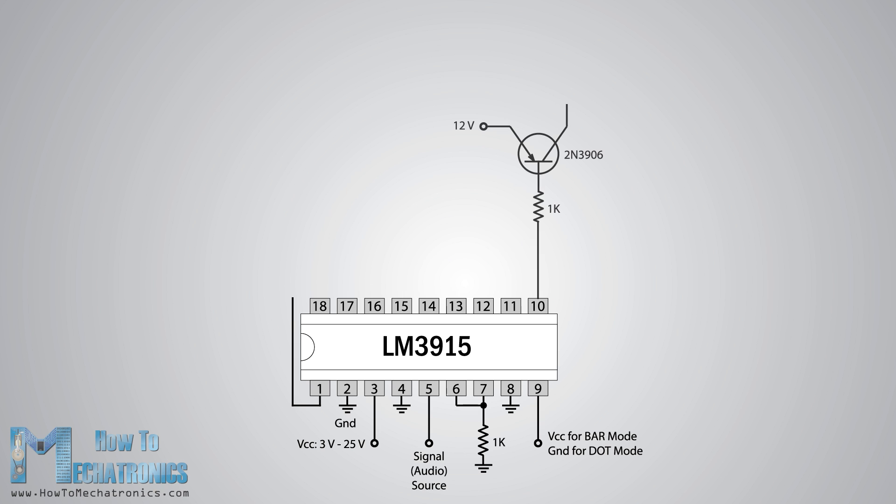At each output instead of a LED I connected an NPN transistor through a 1k resistor for protection and at the collector of each transistor I connected 4 LEDs through 470 ohm resistors.